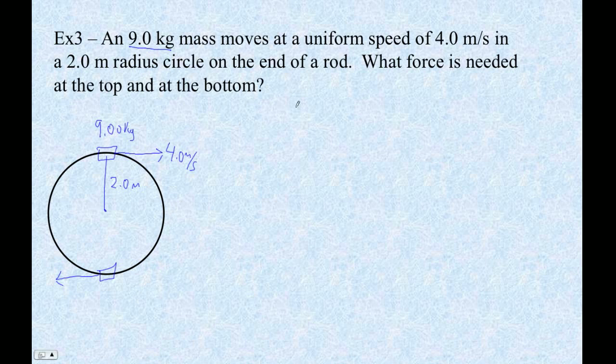So the first thing I'm going to do is let's figure out the centripetal acceleration. So that's going to be v squared over r and 4 squared divided by 2. Last I checked was 8.0 meters per second squared. Now, if you notice, that's less than 9.81.